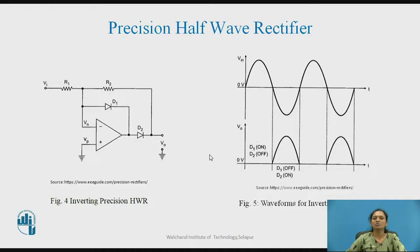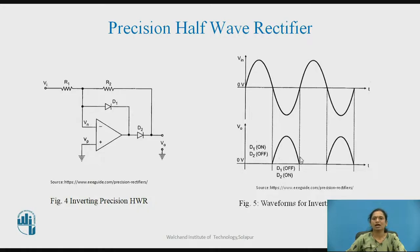During the positive half cycle, since D1 is on and D2 is off, no signal appears at the output. In the other case, where a negative input is applied to the inverting input terminal, diode D1 will not conduct but diode D2 conducts. Because of the inverting terminal, there is a phase shift in the signal, and therefore we get a positive half cycle for the negative half of the input signal. This is the waveform for the inverting precision half wave rectifier.